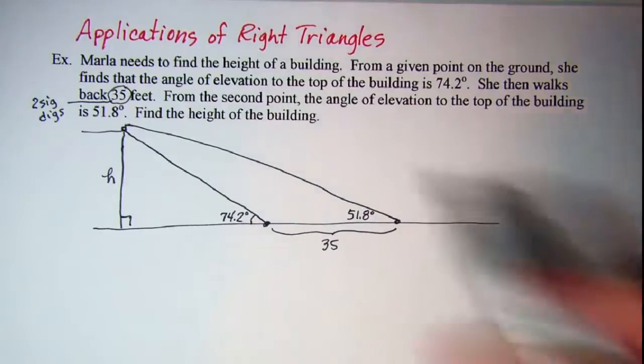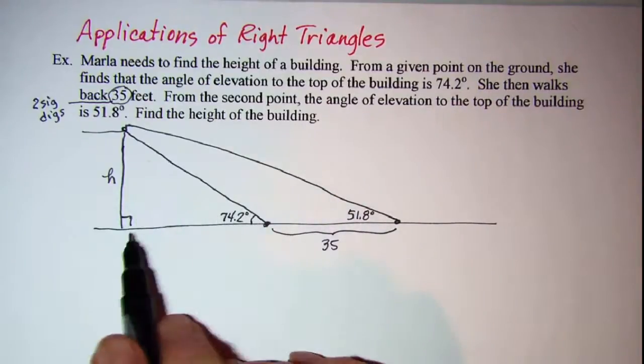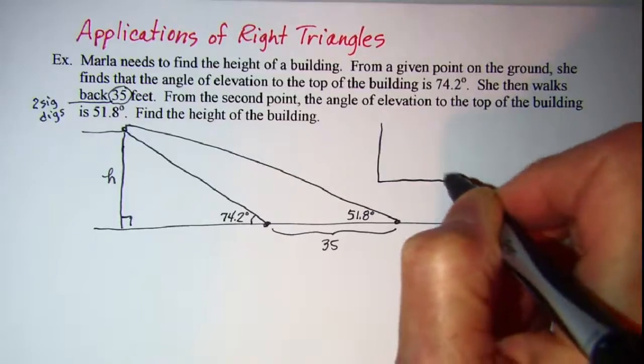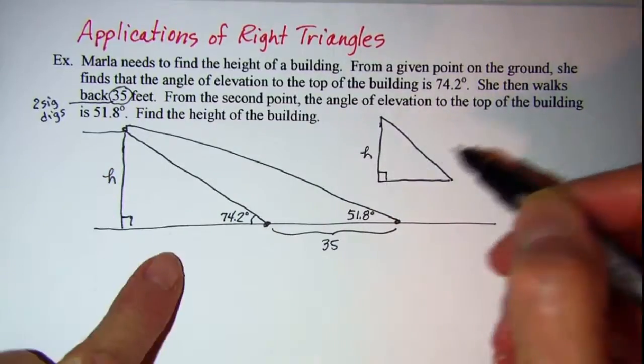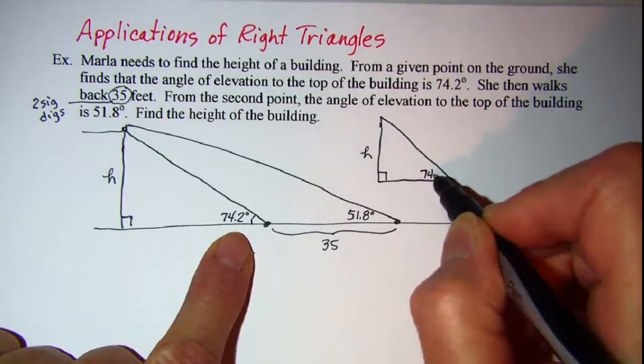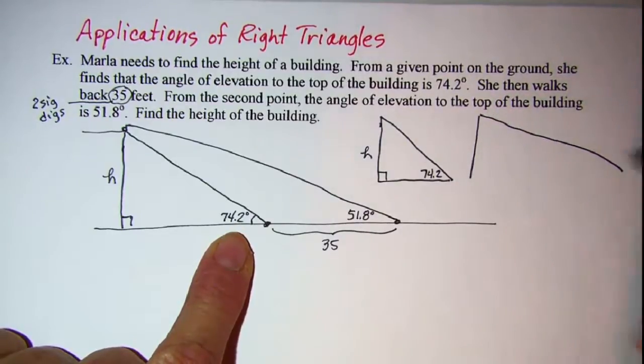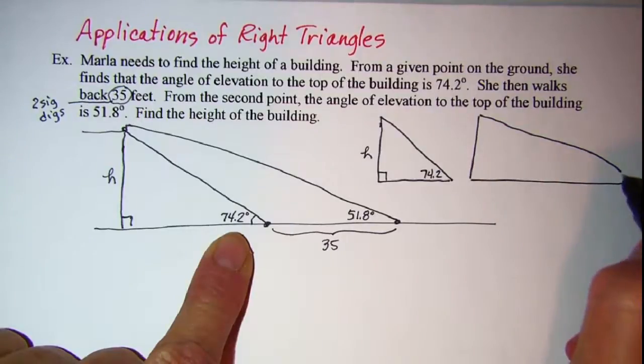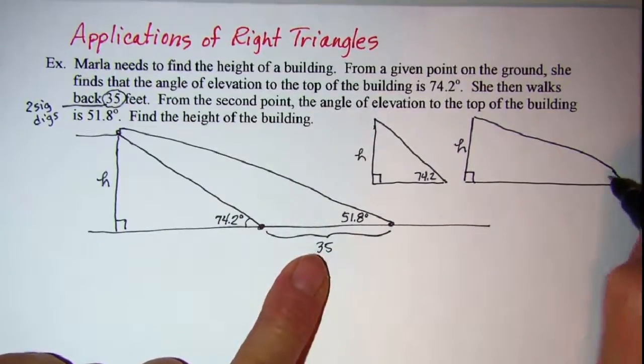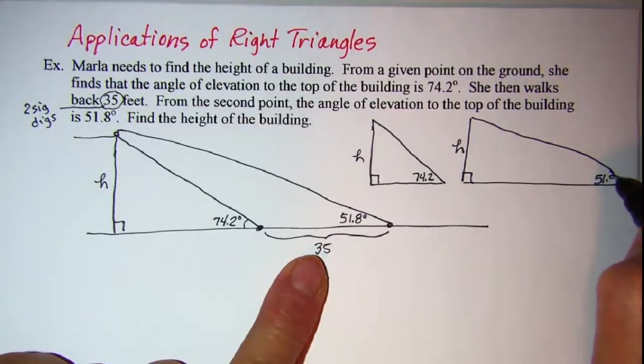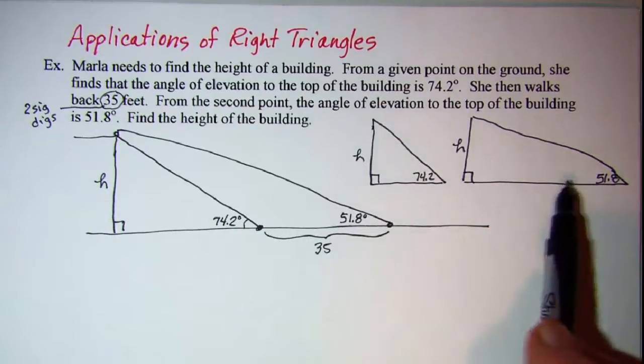Now it may help for us to split this diagram into two triangles. We have our shorter one here, this side is H and this angle is 74.2, and then we have our bigger one and again the height of the building is H.